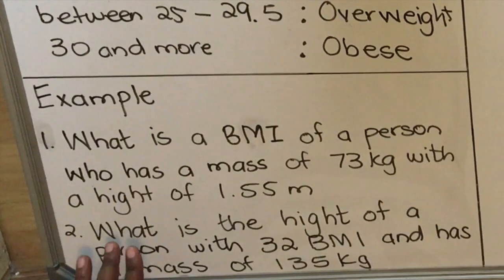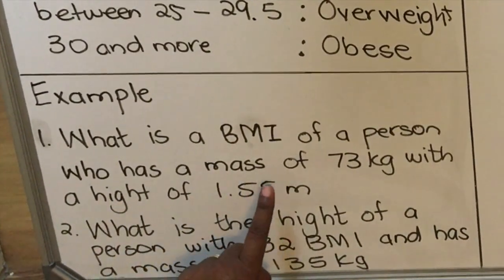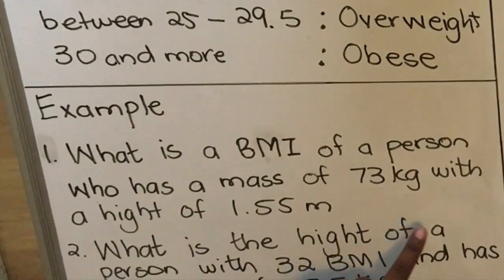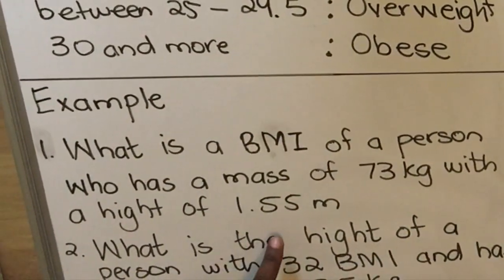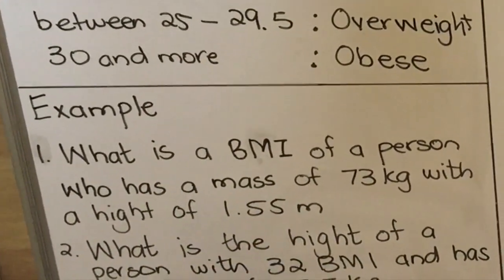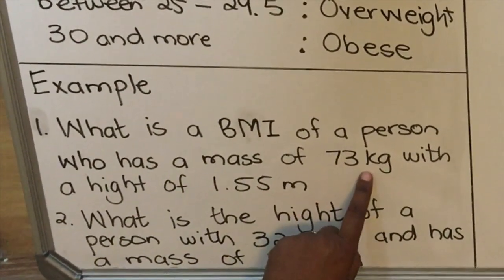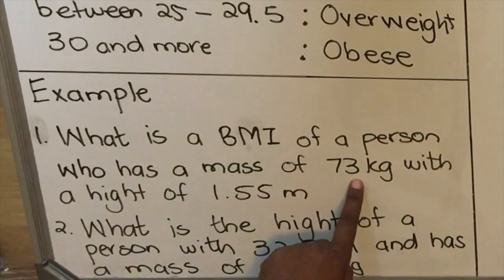The first example says: What is the body mass index of a person who has a mass of 73 kilograms with a height of 1.55 meters? Now you have to look at your mass—it has to be in kilograms. If it's not given in kilograms, you have to convert it to kilograms.